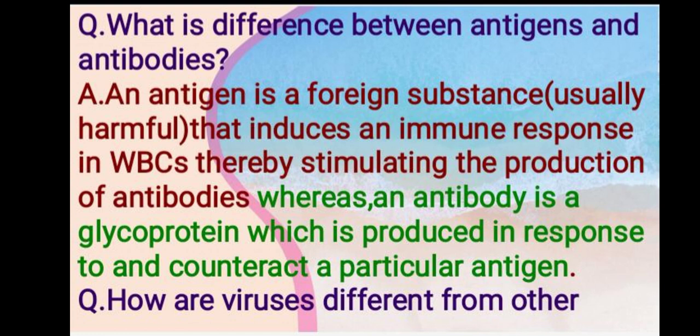Next question: what is the difference between antigens and antibodies? An antigen is a foreign substance, usually harmful, that induces an immune response in white blood cells, thereby stimulating the production of antibodies. Whereas an antibody is a glycoprotein which is produced in response to, and to counteract, a particular antigen.